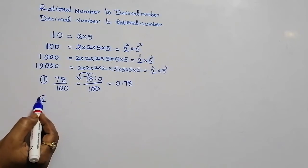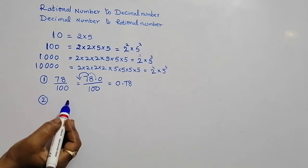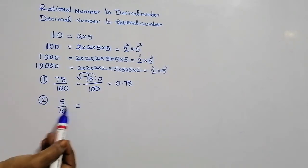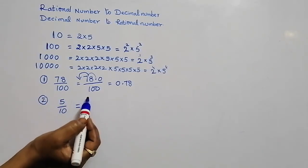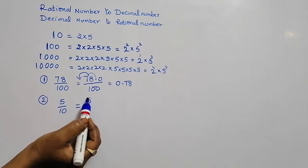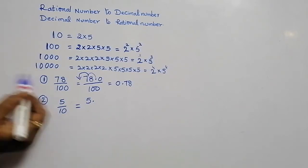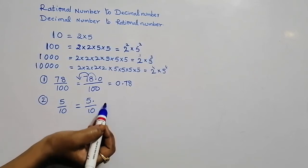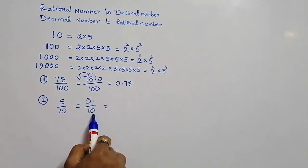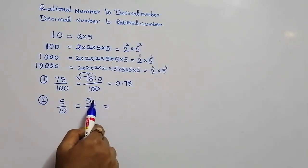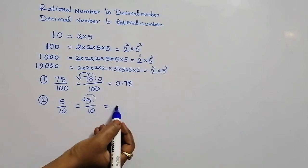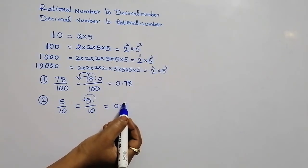The next example is 5 by 10. The decimal point for 5 is after the number. In the denominator we have 10, which has 1 zero, so the decimal point moves one place to the left. This gives us 0.5.